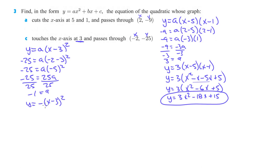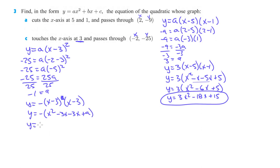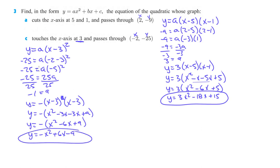So this would be y equals negative (x minus 3) squared. It still wants it in standard form, so we FOIL out (x minus 3)(x minus 3): x times x is x², x times negative 3 is negative 3x, negative 3 times x is another negative 3x, and negative 3 times negative 3 is positive 9. So y equals negative (x² minus 6x plus 9). Distributing the negative gives a final answer of negative x² plus 6x minus 9 for part c.